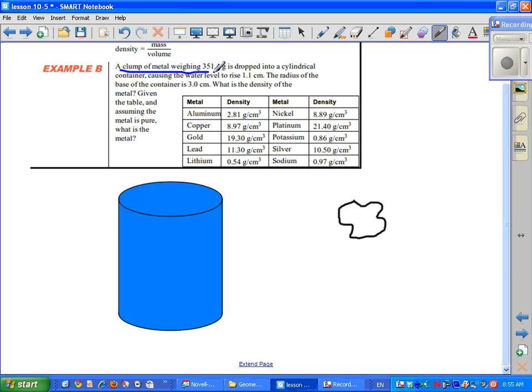It says a clump of metal weighing 351.4 grams is dropped into a cylindrical container causing the water level to rise 1.1 centimeters. The radius of the base of the container is 3 centimeters. What's the density of the metal?